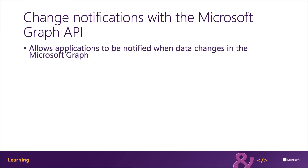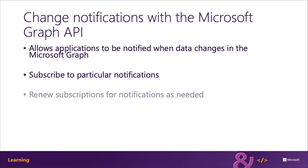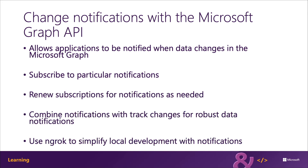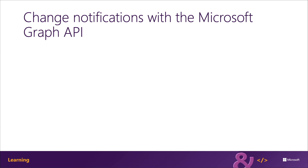Now let's focus on a specific feature that Microsoft Graph has to offer developers: change notifications. Change notifications enable applications to be alerted when data changes or is created in Microsoft Graph. When the watched entity is created, updated or deleted, Microsoft Graph will submit an HTTP POST to the specified endpoint. Your custom endpoint listens for these changes and acts on them based on the logic defined by your business requirements.